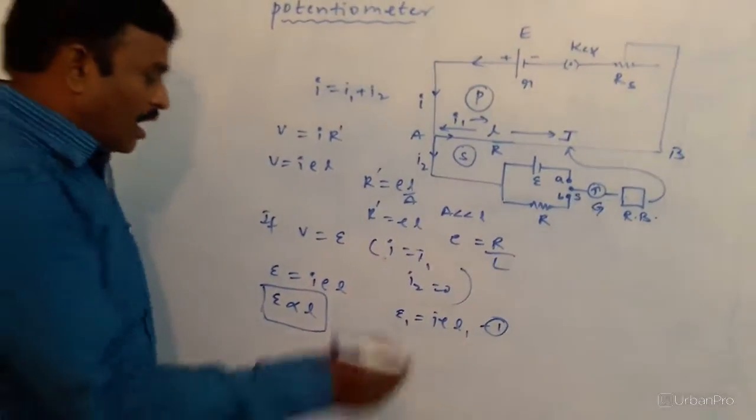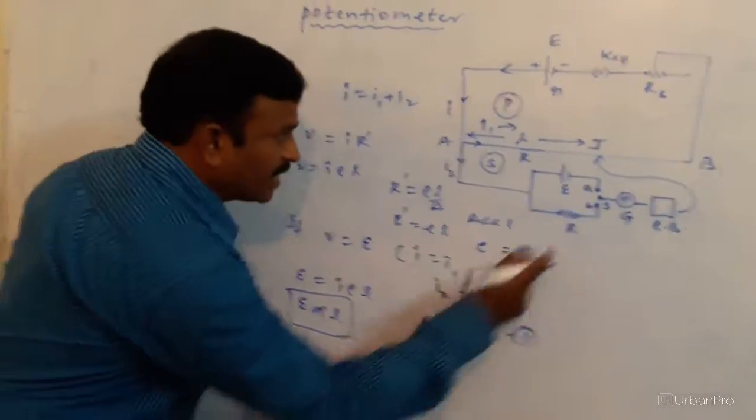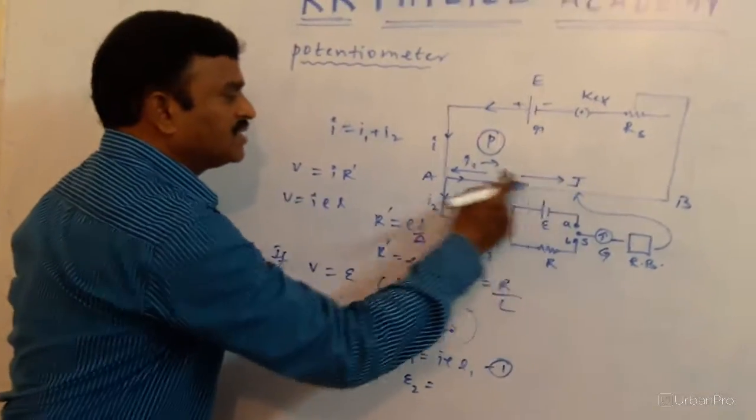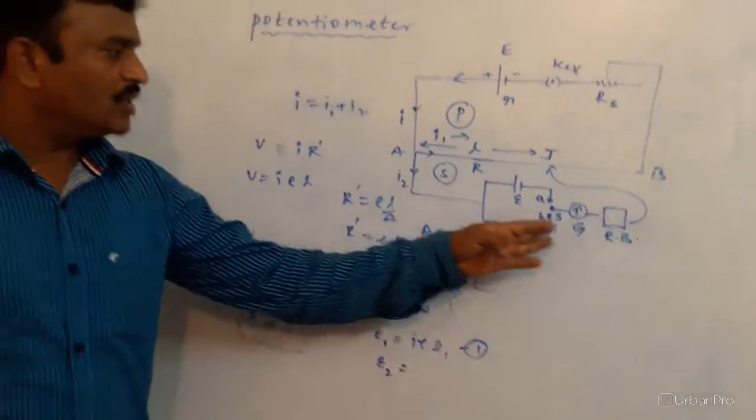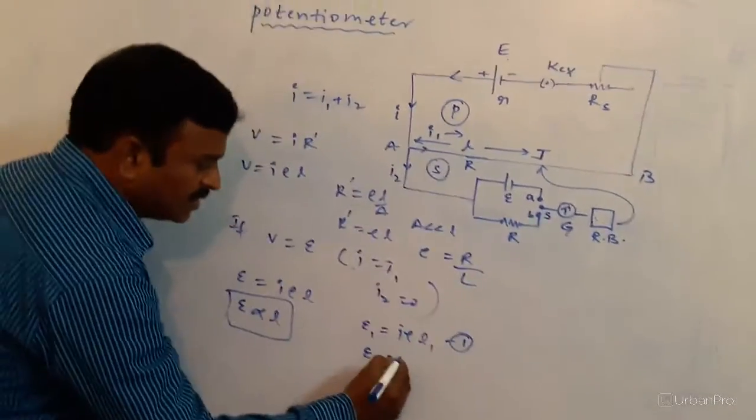We have to take an unknown cell whose EMF is E2. Again, we have to place here. We have to find out the balancing length slowly by moving the particular length only. Galvanometer shows the zero deflection. Then, we have to find out the balancing length.